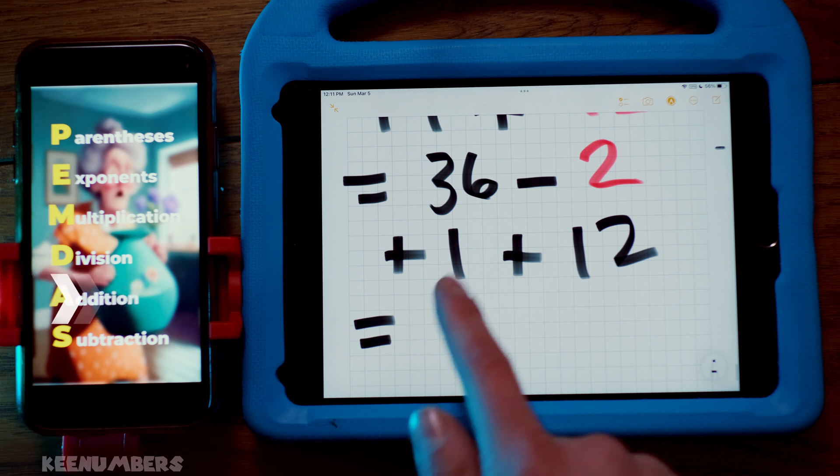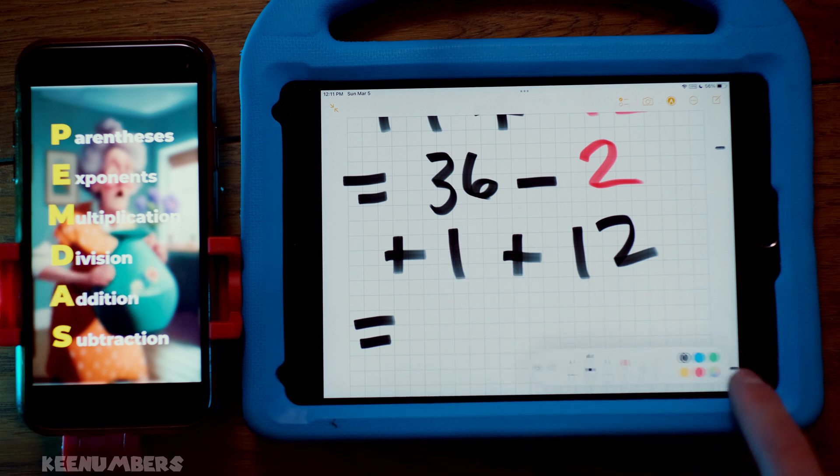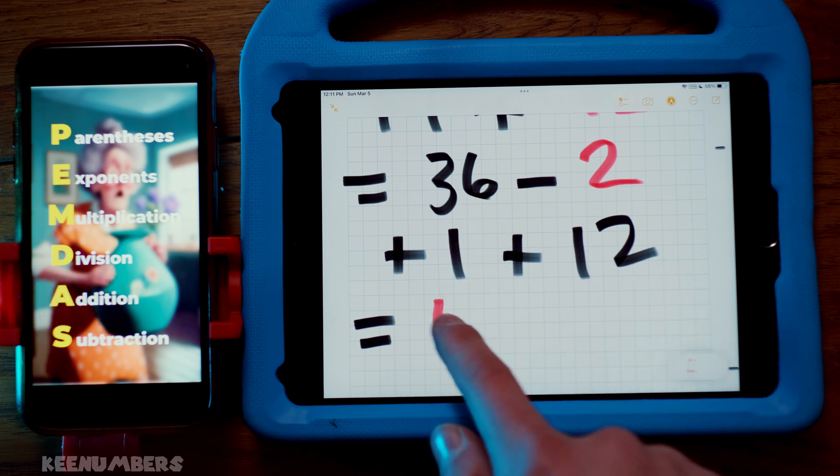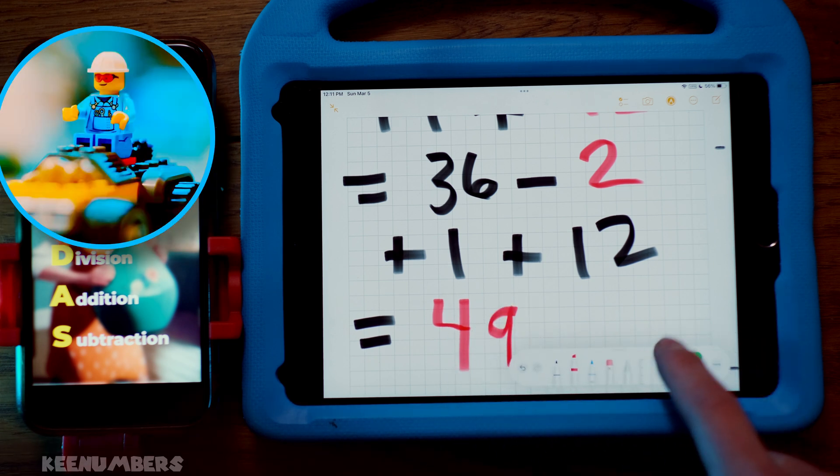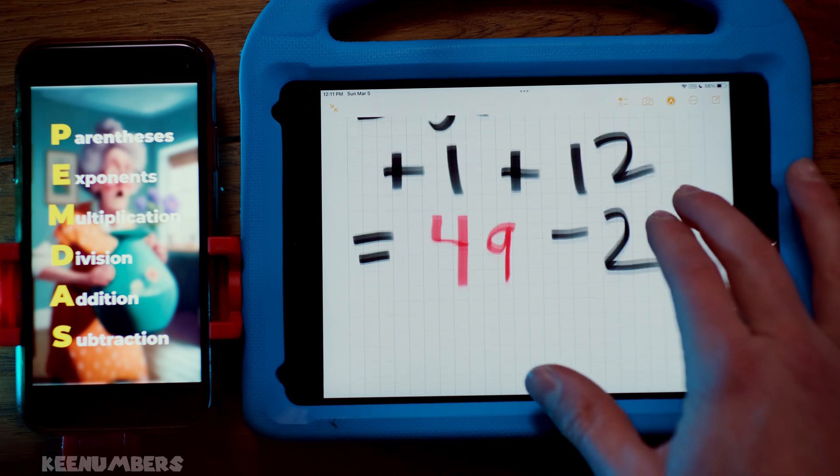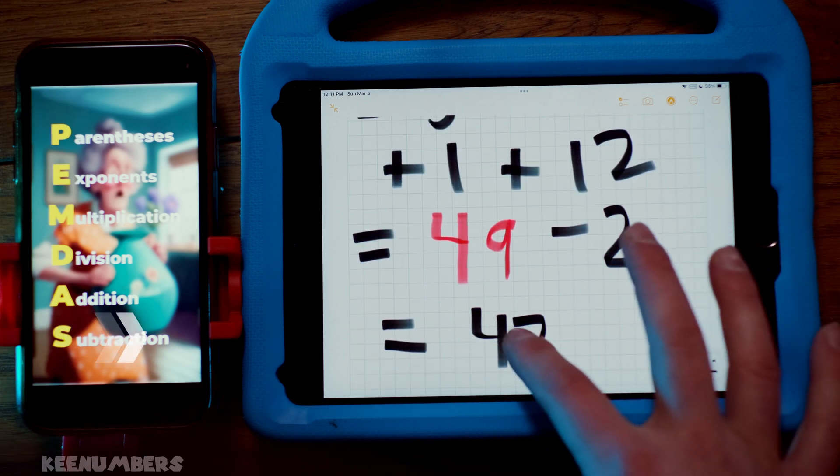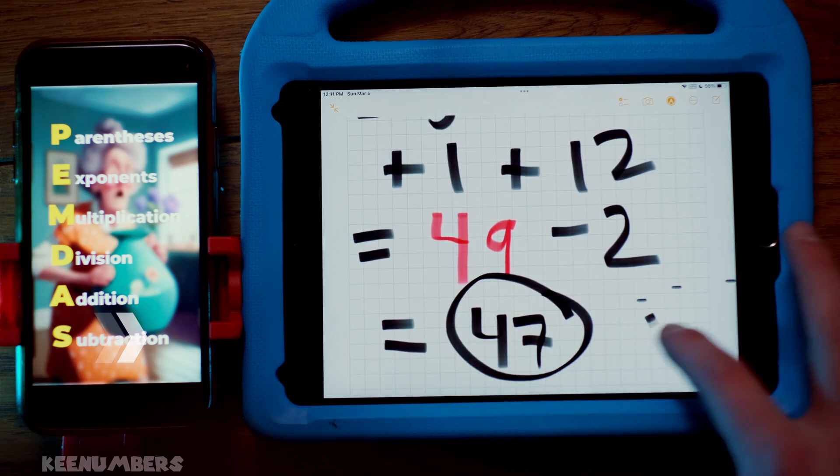Pause, rewind, fast forward as you need to. 36 plus 1 plus 12. Last time I checked, that's still 49. Then you're going to subtract 2. So 49 take away 2 is 47. There's your answer, and Bob's your uncle.